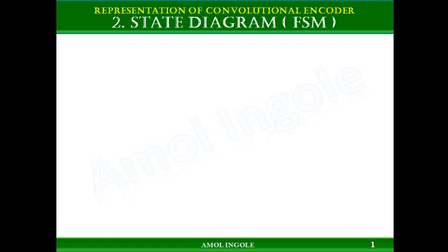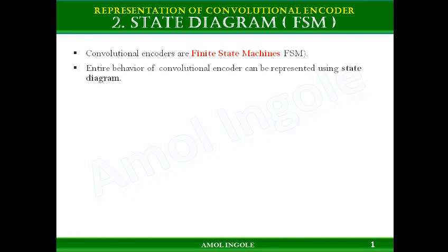Hello students, this is Amol Ingole. In this video I am going to explain the state diagram for a convolutional encoder. Convolutional encoders are finite state machines, and the entire behavior of a convolutional encoder can be represented using a state diagram. The state diagram is one more way of representing a convolutional encoder — we have already discussed the tree diagram, and this is the second way of representation.